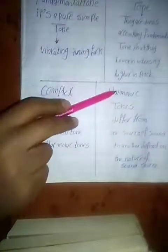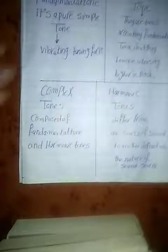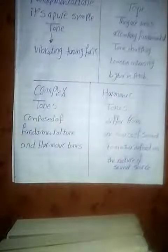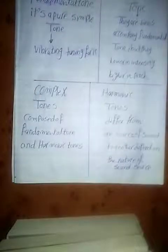Now, comparing complex tones and harmonic tones — they are not the same. A complex tone is composed of a fundamental tone plus harmonic tones. When we combine the fundamental tone with harmonic tones, it gives us complex tones. Importantly, the harmonic tones differ from one source to another — they depend on the nature of the sound source.